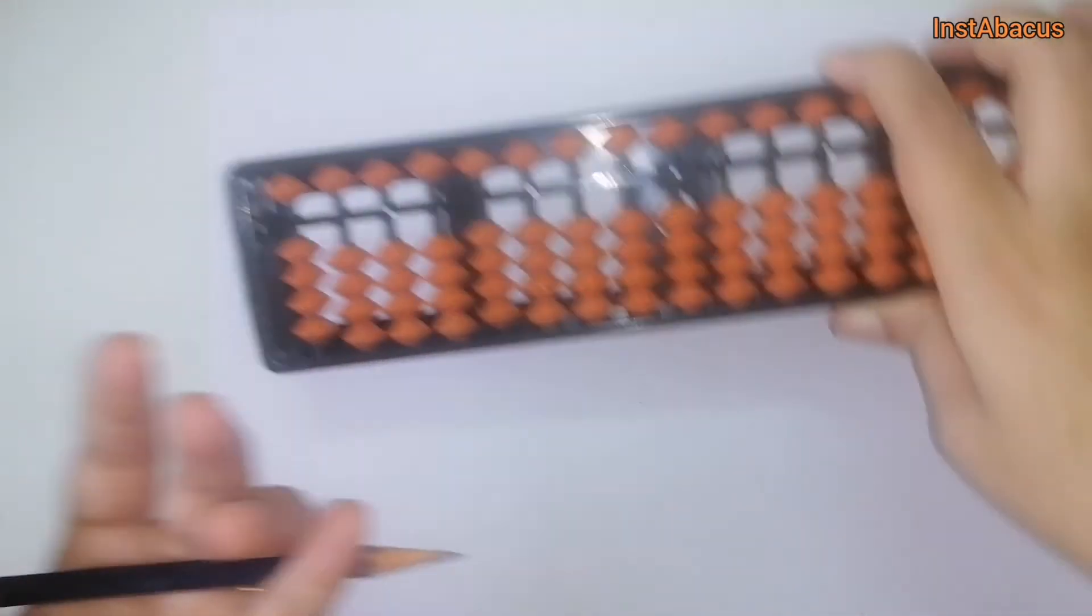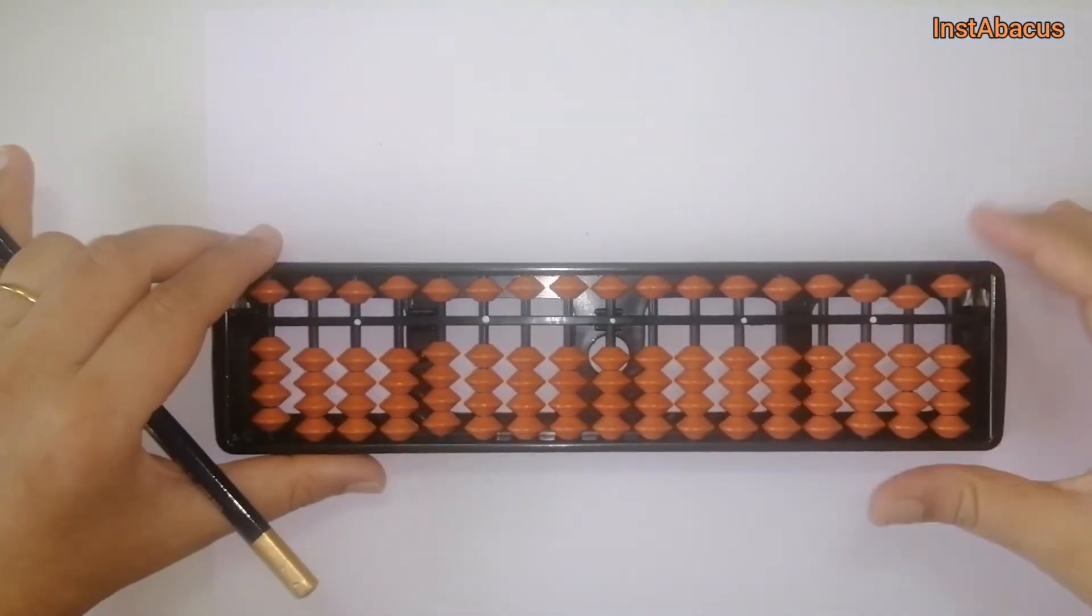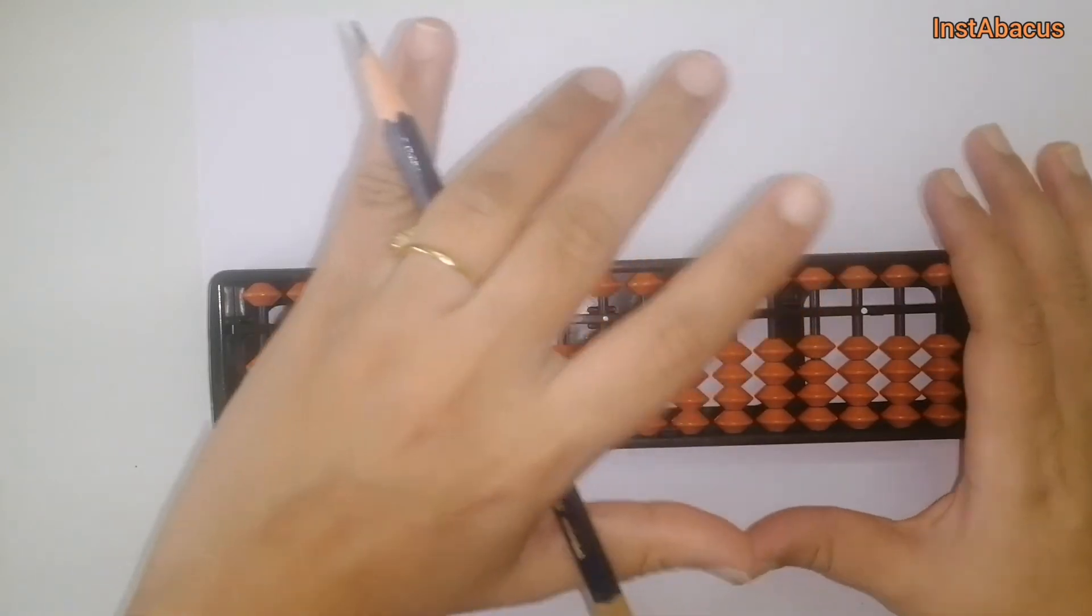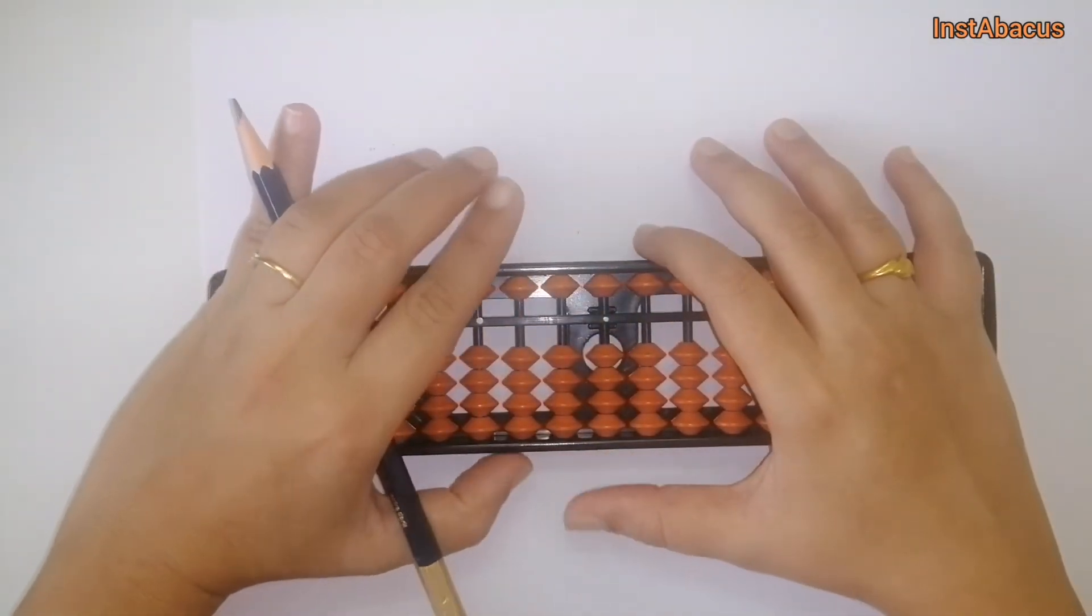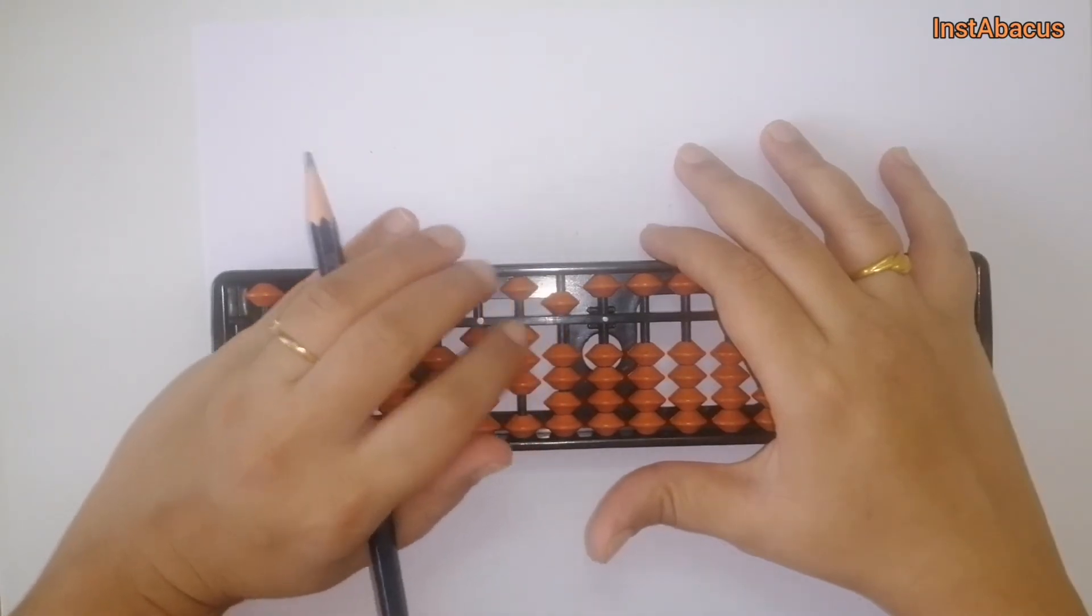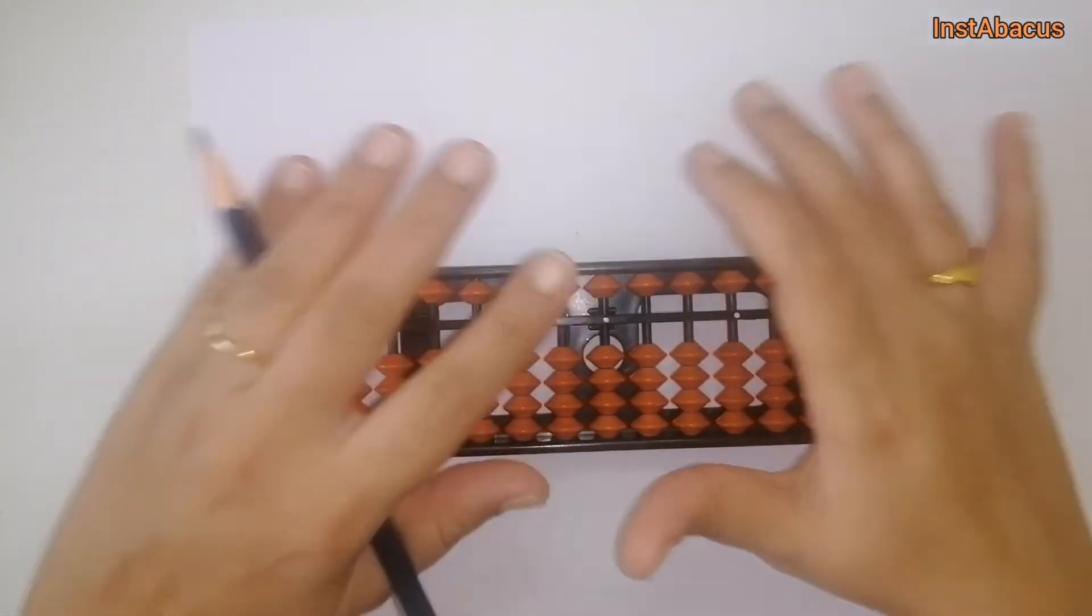If you are left-handed, you're going to support your abacus with the thumb like this, and these two fingers will move on the abacus.